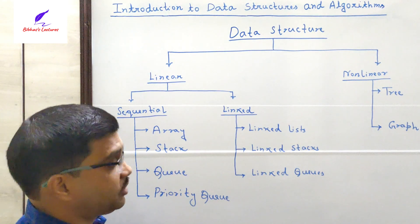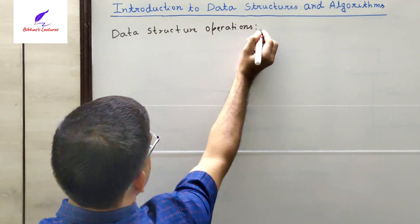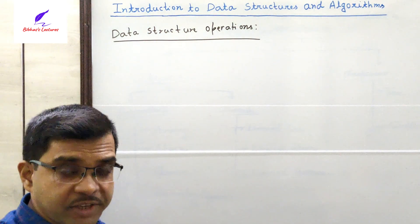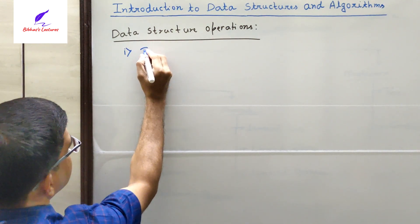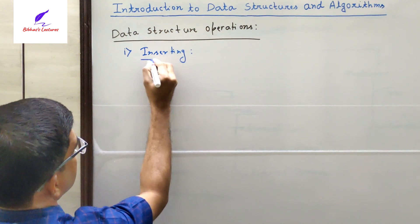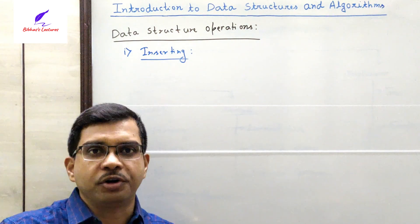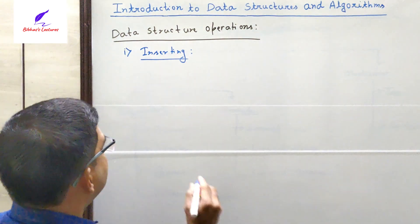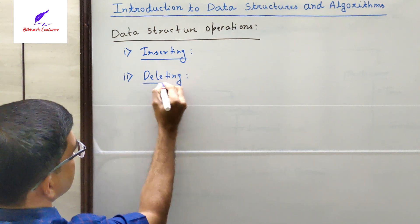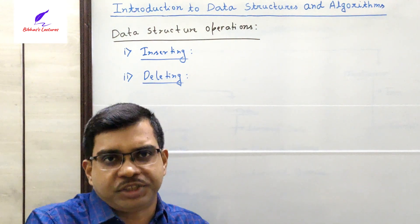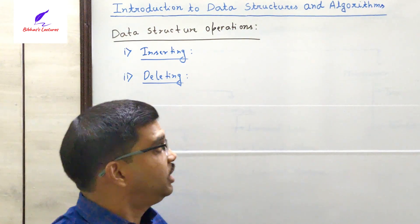Now, what are the operations that we can perform on data structures? We can perform various types of operations. The first one is inserting — inserting means if we want to add or insert a new element or new record into that structure. Number two is deleting — deleting means if we want to remove some existing elements or existing records from the structure. This removal process is called the deletion operation.